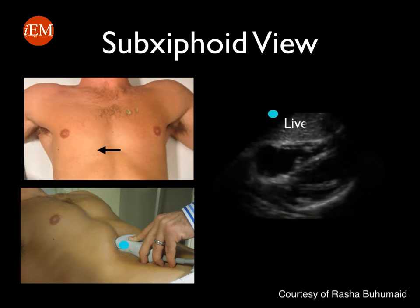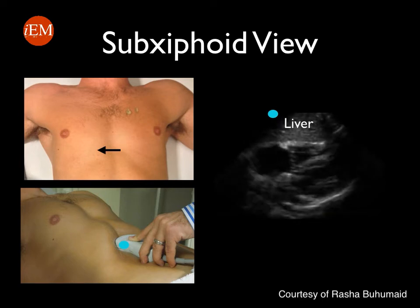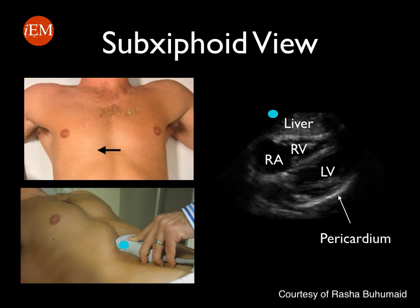This is the ultrasound image corresponding to this view — this is how a normal sub-xiphoid view will appear. The first chamber close to the liver is the right ventricle, and there is the left ventricle and the pericardium, which is noted as the white stripe surrounding the heart.